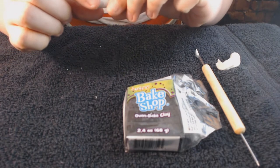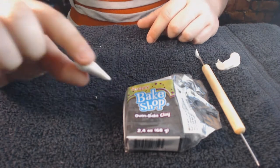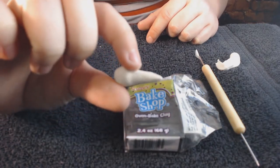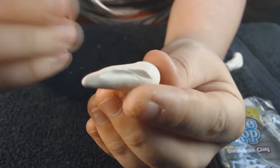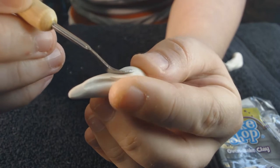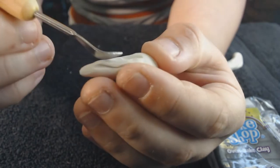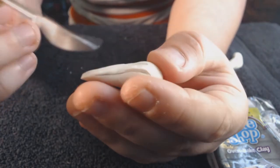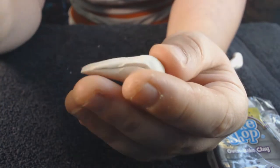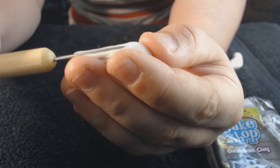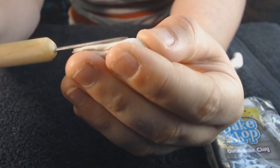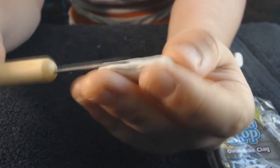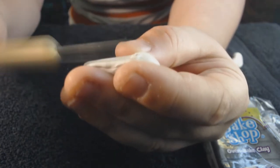Then I started to give it a dorsal fin which doesn't look that good in this picture. Eventually I smooth it out a little bit and I just go in with this little clay tool. I got it on eBay, you can get them pretty cheap. Just go and look for the cheapest tools like this and you'll find a way to use them after a while.